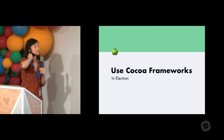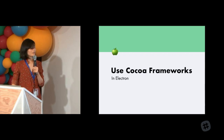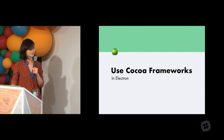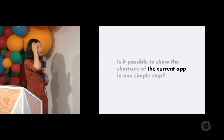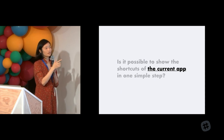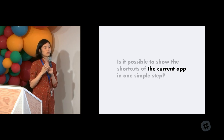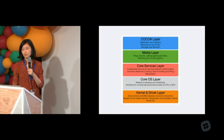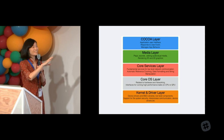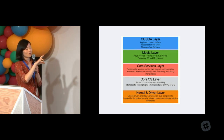Let's talk about how I use Cocoa frameworks in Electron. It's easier than it seems — all I had been working with is JavaScript, so it seemed scary at first. I needed to find the current app. In order to do that, I needed to find out what in OS X knows that. I'm going to briefly talk about the five layers OS X has: the Cocoa layer, media layer, core services layer, core OS, and kernel.